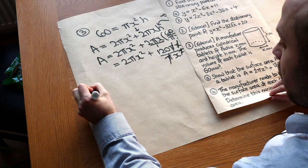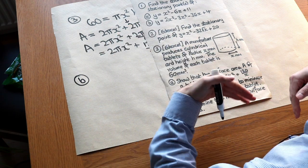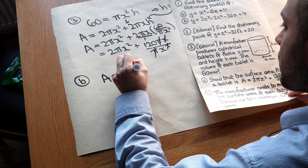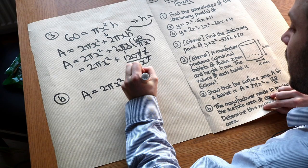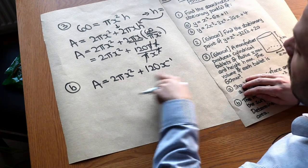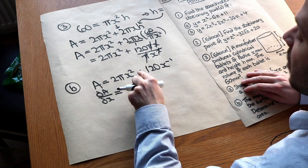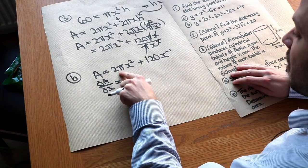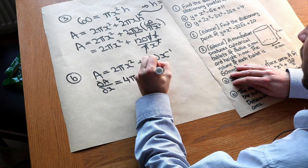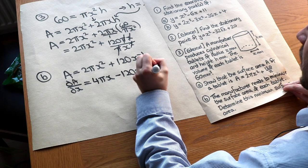Now we've done the hard part. The manufacturer needs to minimise the surface area. Writing the expression using powers of x: A = 2πx² + 120x^(−1). Differentiating with respect to x: dA/dx = 4πx − 120x^(−2). Because we're finding a minimum — a stationary value — we set dA/dx equal to zero.